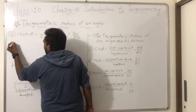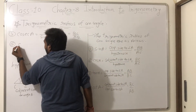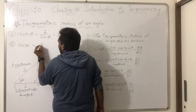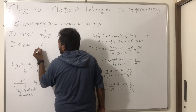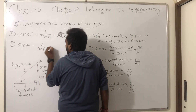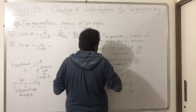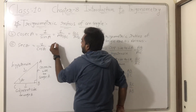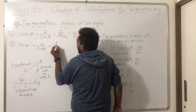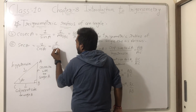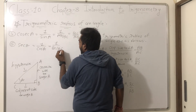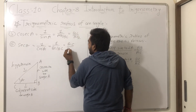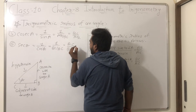The last one is sec A. Sec A means 1 by cos A. Cos A is BC by AC, so 1 by BC by AC gives us AC by BC. So sec A equals AC by BC.